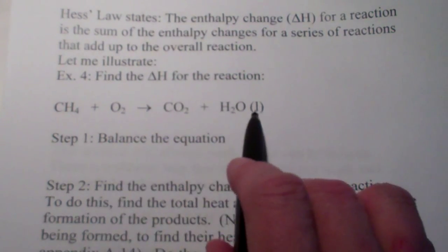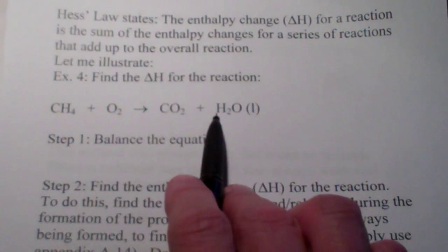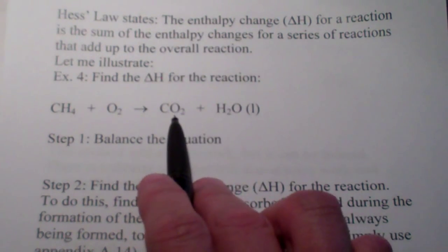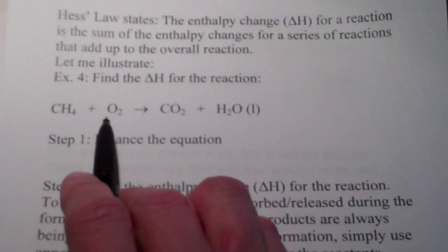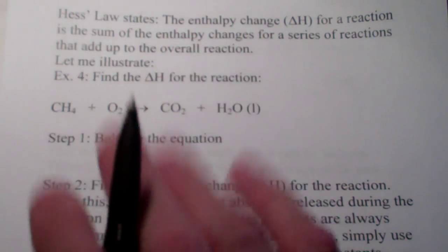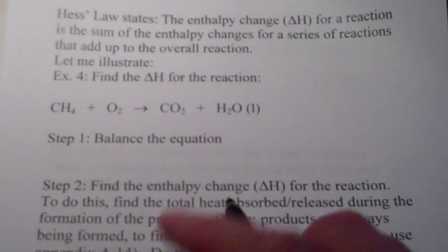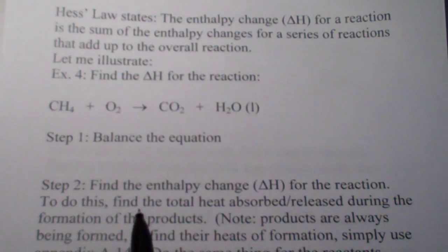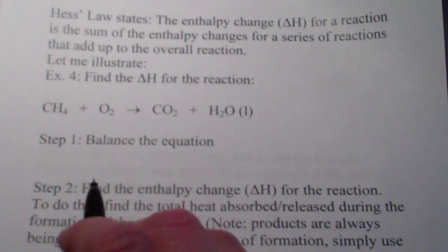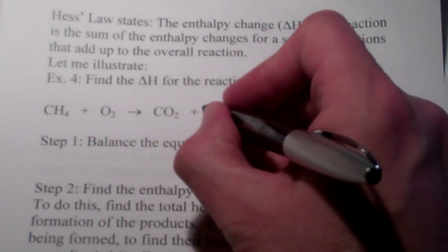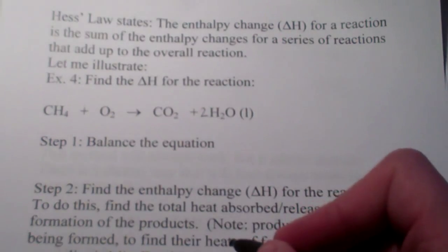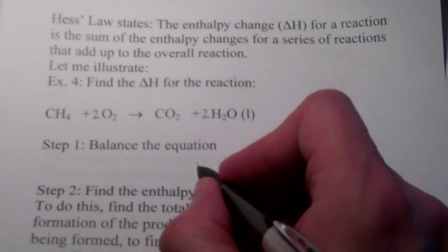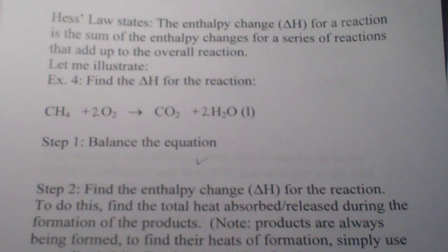Here's an equation. Notice this is not a heat of formation equation — I'm not forming a compound from its elements, so it's a little bit different than last time. To find the heat of this reaction, we first need to balance it. I'll balance this quickly by putting a 2 in front of H2O and a 2 in front of O2, so that equation is balanced.